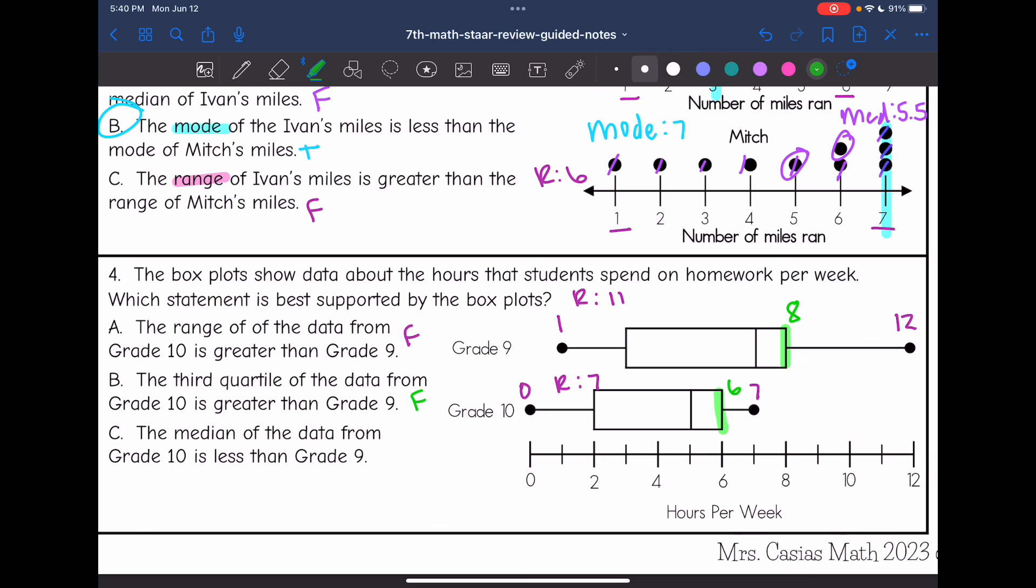Let's look at C. It's talking about the median of the data. The median of the data from grade 10 is less than grade nine. So grade nine, it looks like it has a median of seven and grade 10 has a median of five. So the median of the data from grade 10 is less than the data from grade nine. So C is our answer.